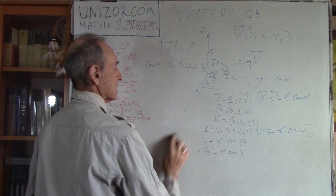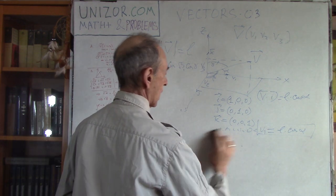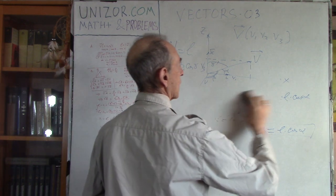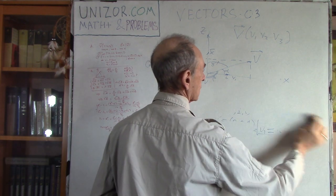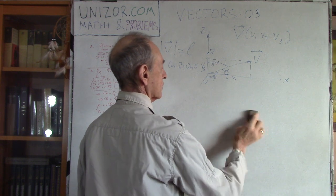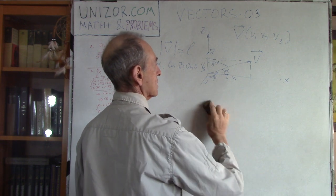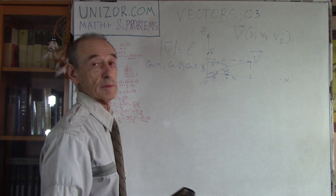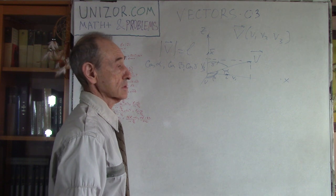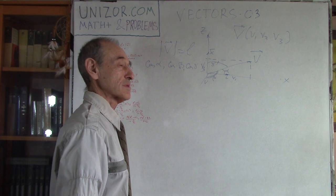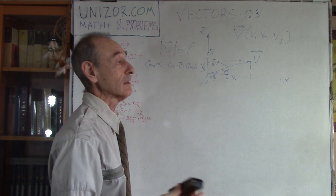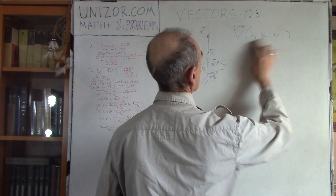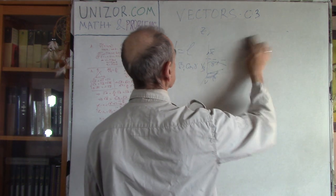These angles alpha, beta, and gamma are often called direction angles. So every vector in three-dimensional space has three direction angles — sometimes called directional angles. That's my first problem.